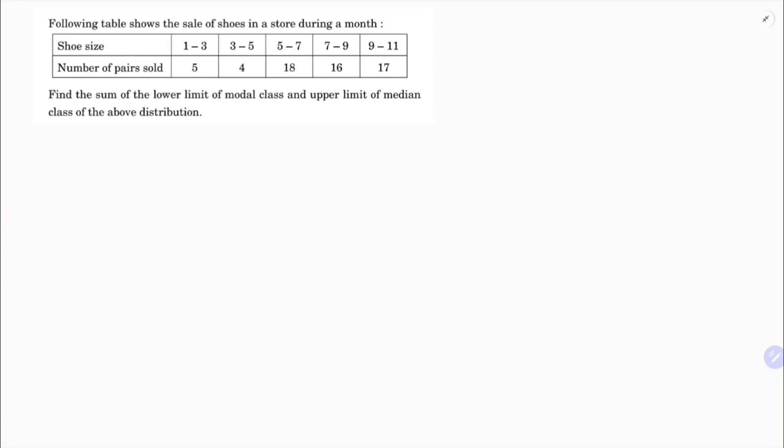The following table shows the sale of shoes in a store during a month. Here, class refers to shoe size, and number of pairs sold is the frequency.